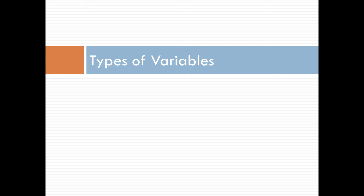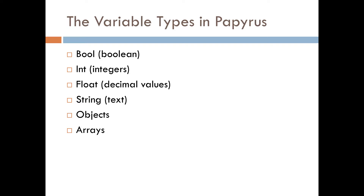Into the meat of it — the types of variables. In Papyrus, you have a bool, which is a boolean; an int, which are integer values; a float, which is decimal values; a string, which is text; and then objects and arrays.